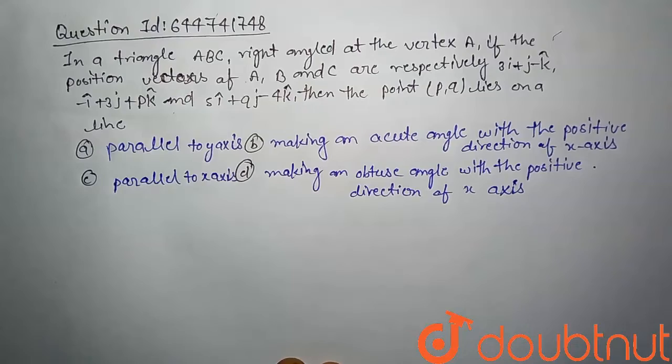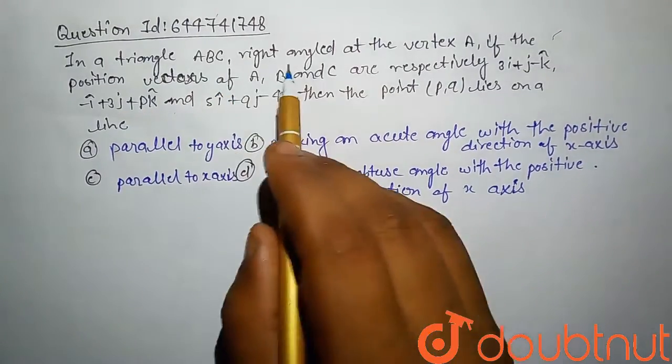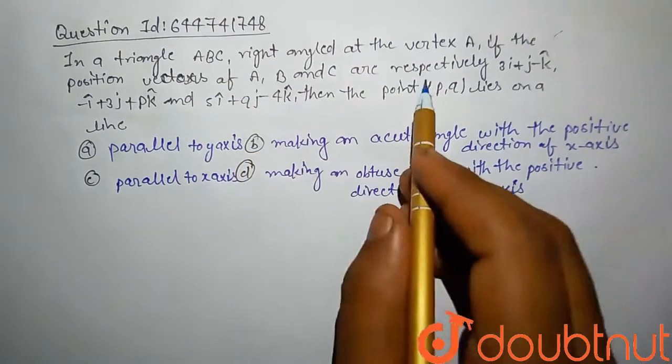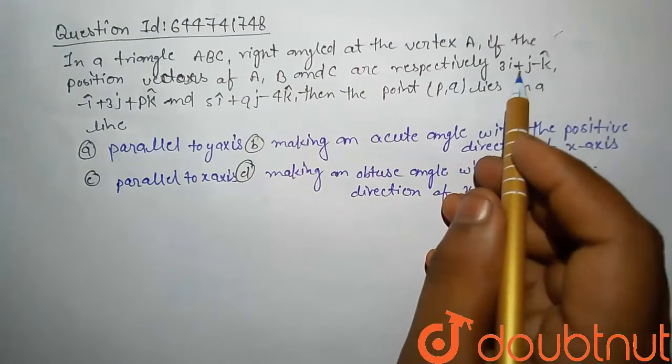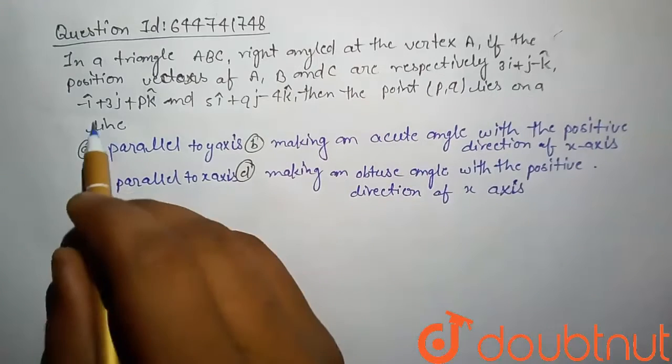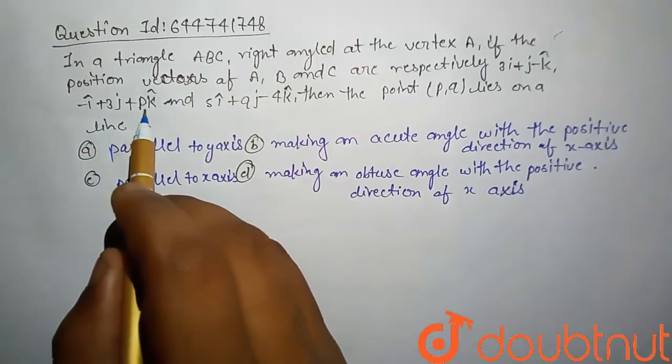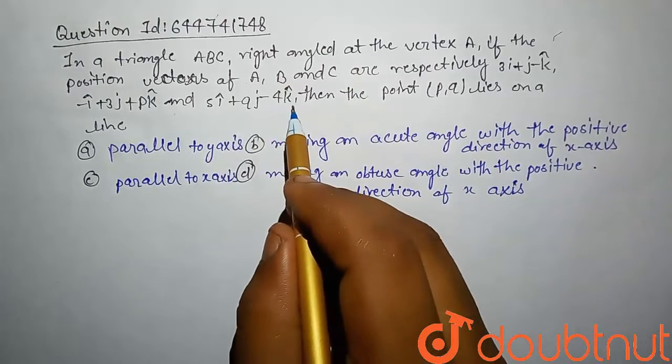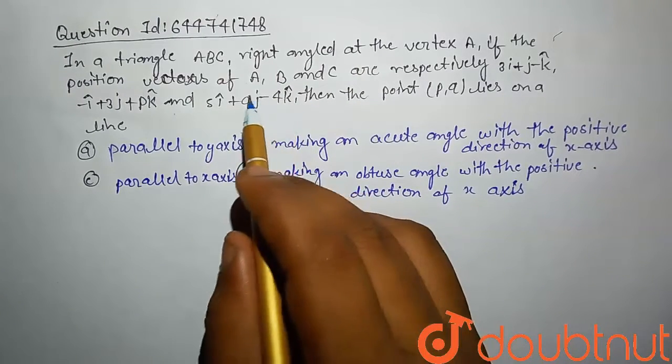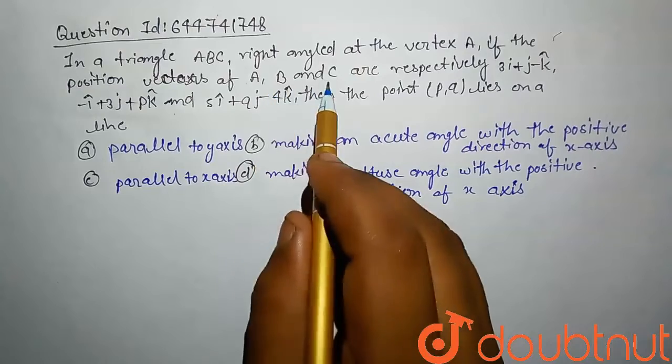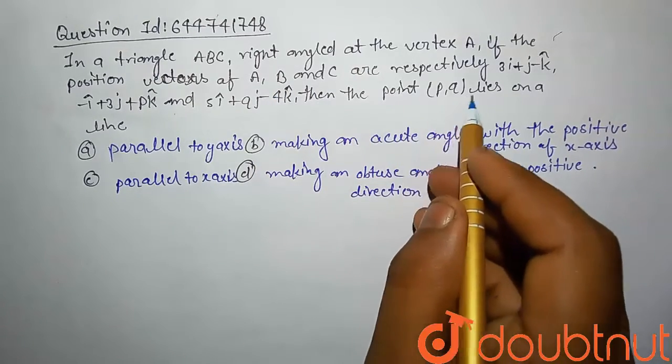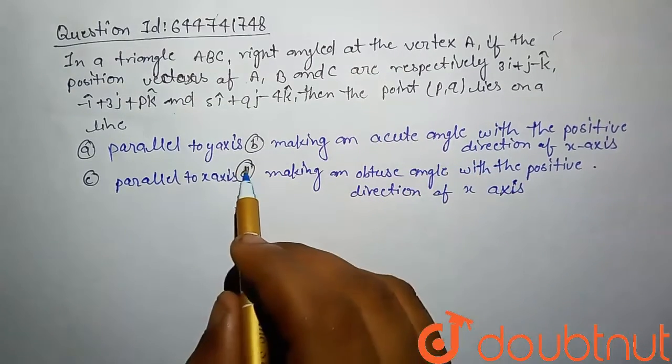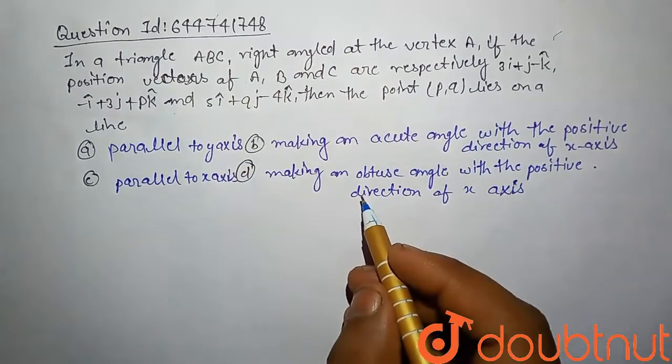Hello friends, today our problem is: in a triangle ABC right angled at the vertex A, if the position vectors of A, B, C are respectively 3i + j - k cap, -i cap + 3j cap + pk cap, and 5i cap + qj cap - 4k cap, then the point (p, q) lies on a line. We have to tell which option is correct.